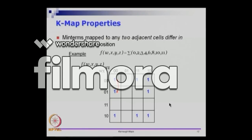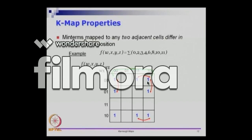This whole arrangement is interesting because we can then do what is called combining. These two cells differ in exactly one position, as do these two cells, and these two cells, and so on. Interestingly, this cell and this cell also differ by only one position — even though they are not technically adjacent in the picture. This term corresponds to 0000 and this corresponds to 0010.